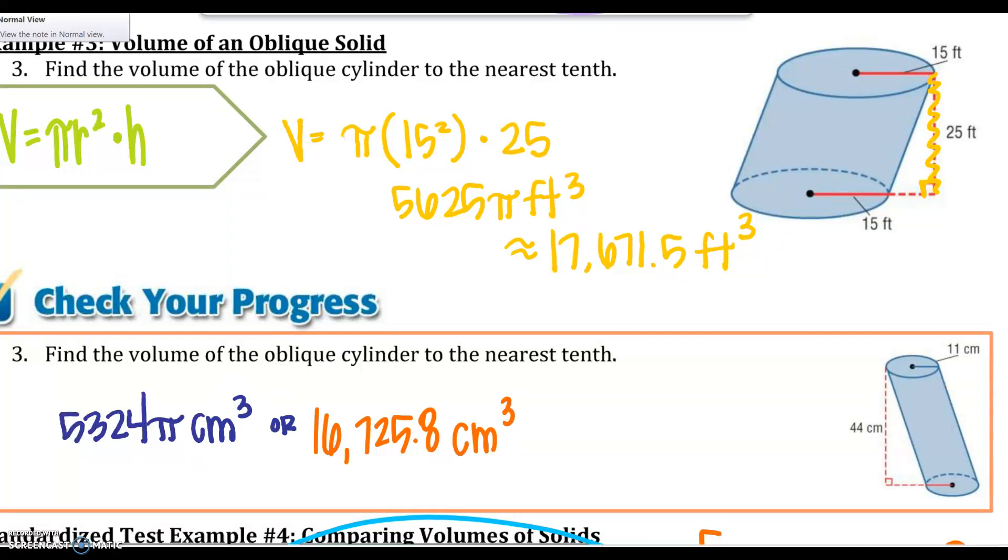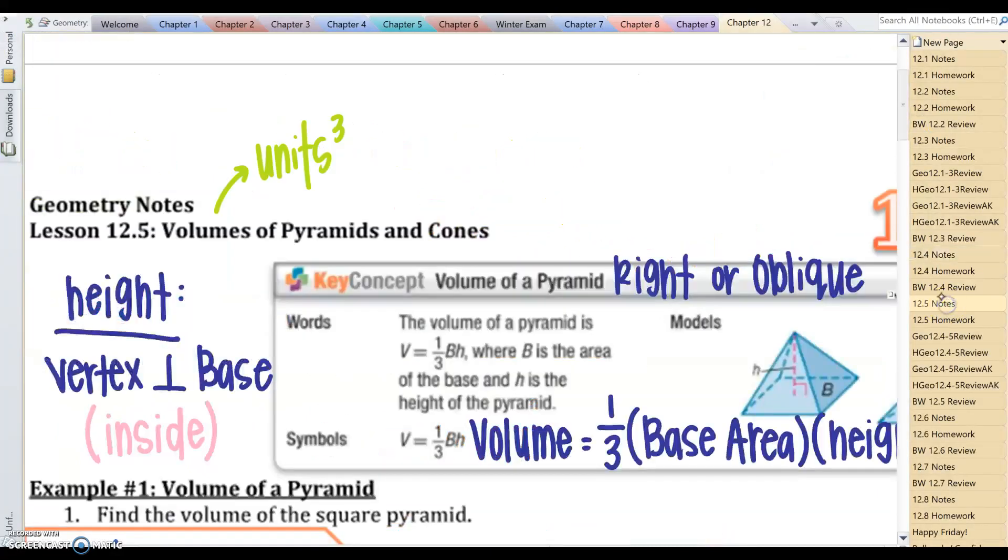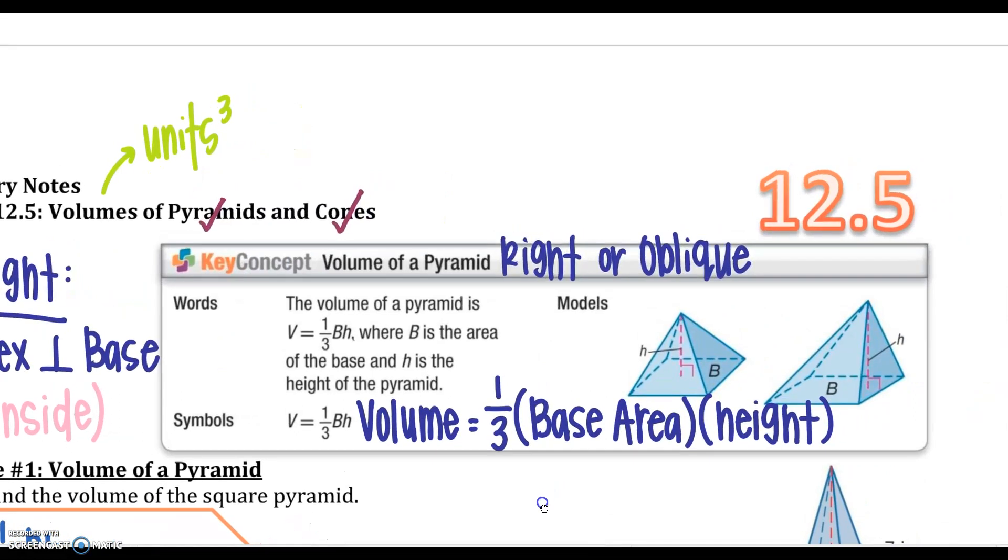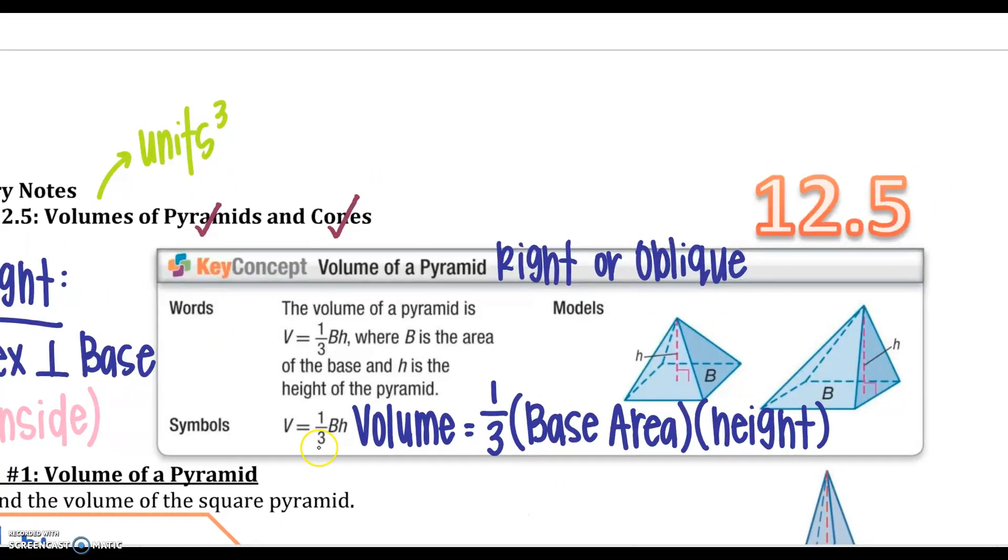Moving on to section 5. Now remember, section 4 was prisms and cylinders, two bases, and that was big B times my height. If I'm doing pyramids and cones, and it can be oblique or right because of Cavalieri's principle, I'm just going to add in this one-third BH. Your base area can be a square, it can be a rectangle, it can be a rhombus, it can be a regular polygon, it can be a triangle. I'm going to find the area of that, which is supposed to be a pentagon, sorry, and then times your height.